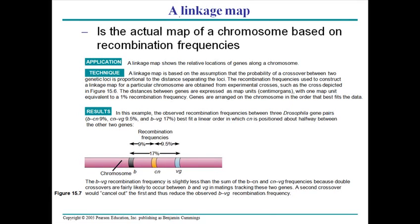Let's talk about what a linkage map is. A linkage map is simply a genetic map. A genetic map is a representation of genes at different loci on a chromosome. If you have a chromosome, we have different genes — gene one, gene two, gene three — sitting on the chromosome. In eukaryotic cells, we have lots of non-functional junk DNA in the chromosomes.